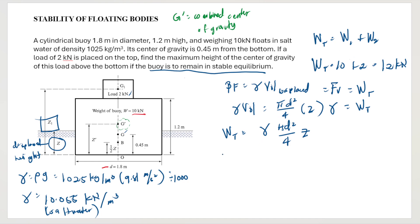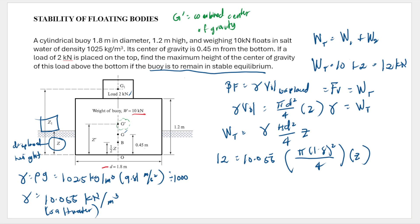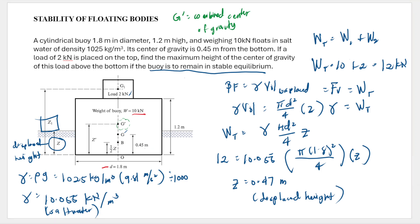So our displaced height Z is 0.47 meters. Notice that the center of buoyancy is very close to the center of gravity, since the original center of gravity was only 0.45 meters from the base. Now we need to find the location of the metacenter, specifically the distance BM from the center of buoyancy to the metacenter.